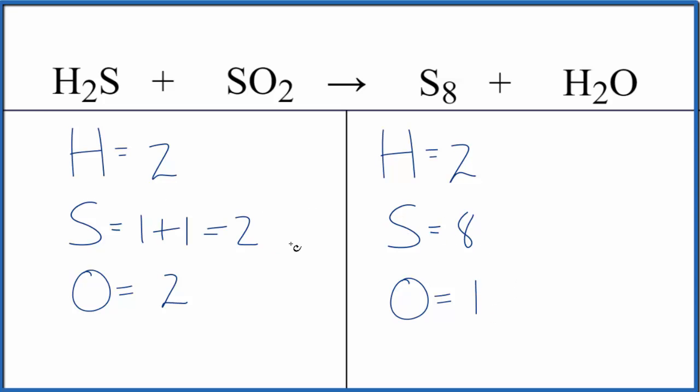So I think what I'm going to do is just put an eight in front of the SO2 and see how that works out. So let's add up the sulfurs again and the oxygens. I have one plus eight. That gives me nine. Actually, I didn't balance the sulfurs, but let's keep going. And then oxygens, eight times two, that gives me 16 of those.